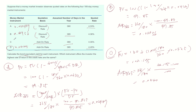Instrument C's AOR based on 365, also known as BEY, is 0.0440. Comparing all instruments — A: 0.04487, B: 0.04456, C: 0.0440, D: 0.0445 — instrument A has the highest BEY.